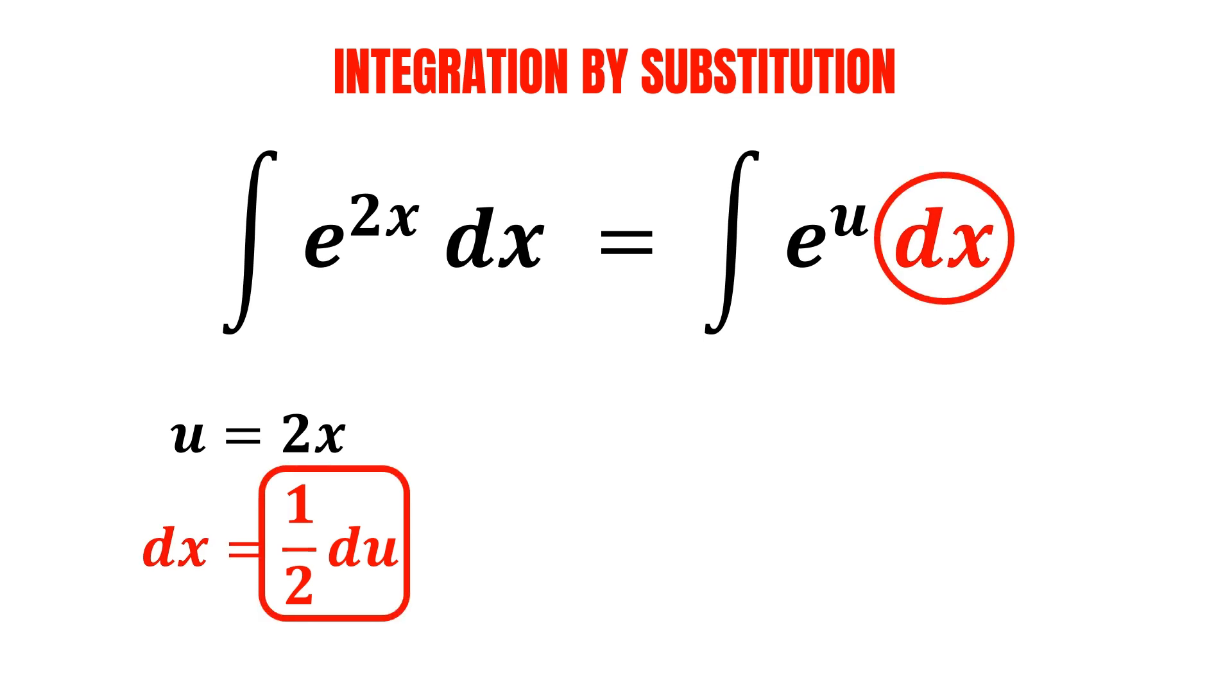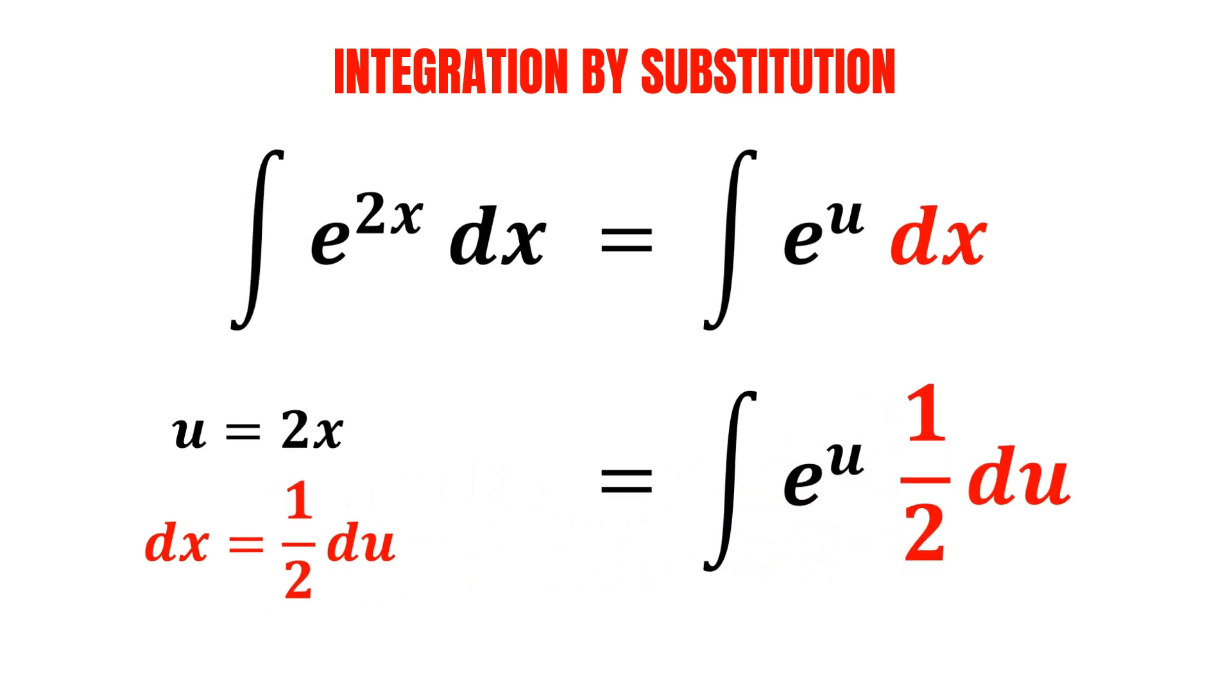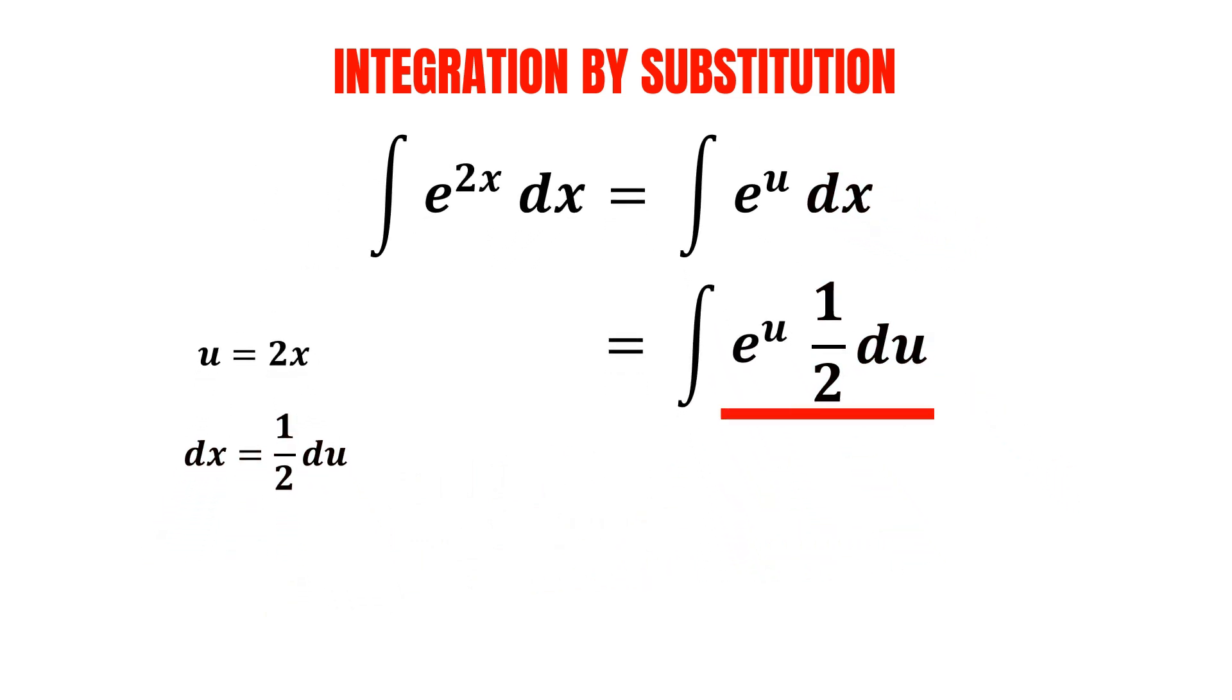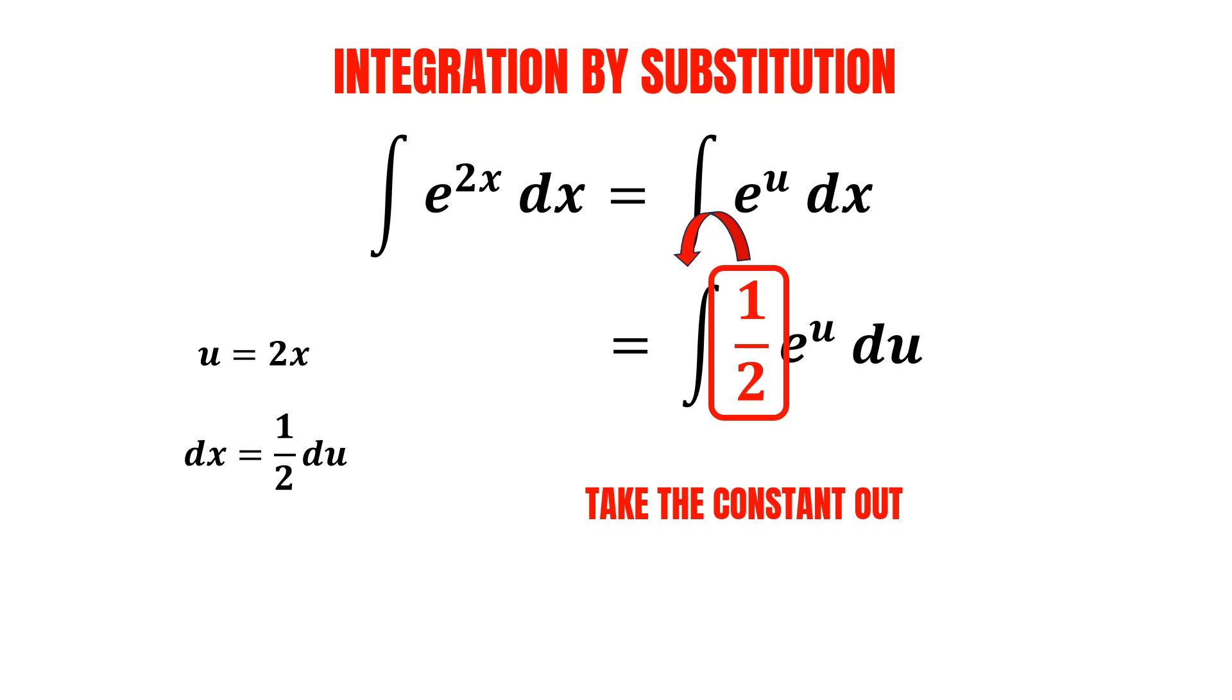Now that we've expressed dx in terms of du, we can replace dx in the integral with 1 over 2 du. Rearrange the equation by bringing 1 over 2 to the front, and notice that it's a constant, so we can take it out of the integral.